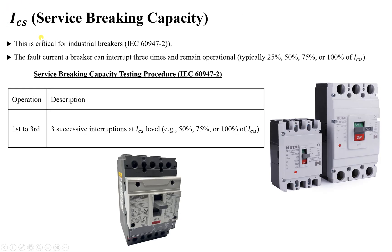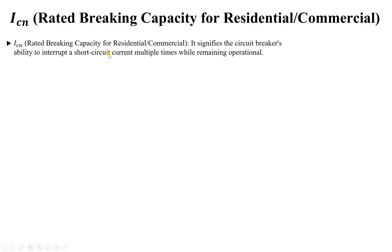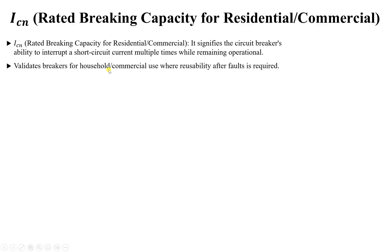The third definition is ICN. Both ICS and ICU are defined under IEC 60947-2 for industrial applications. ICN, however, is defined under a different IEC part related to residential and commercial applications. ICN stands for the Rated Breaking Capacity. It signifies the circuit breaker's ability to interrupt a short circuit current multiple times while remaining operational.